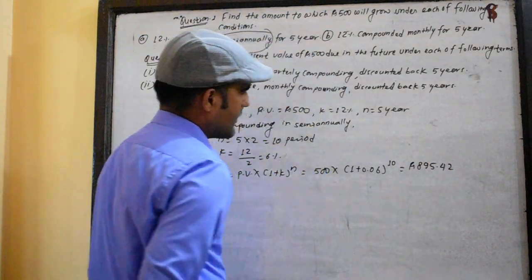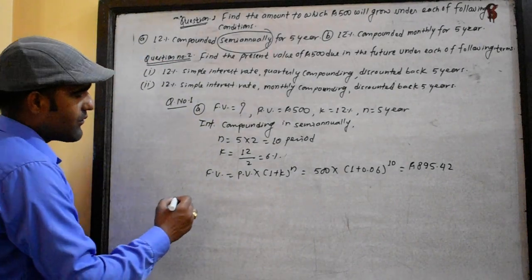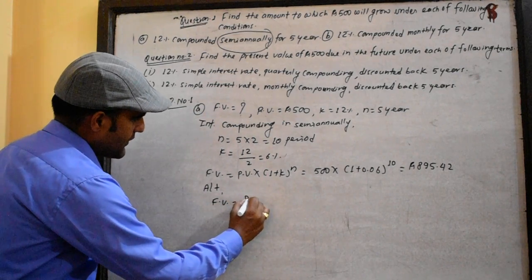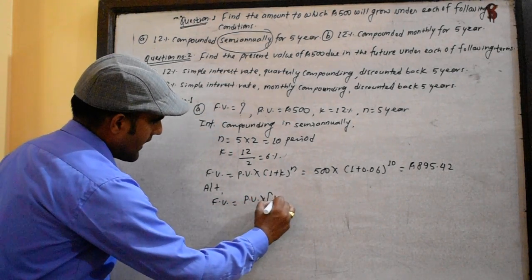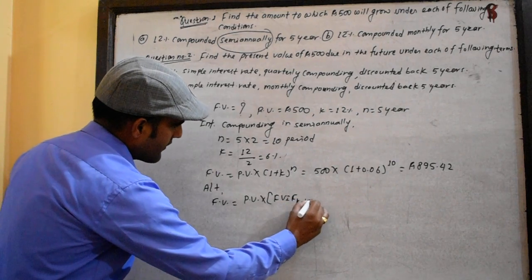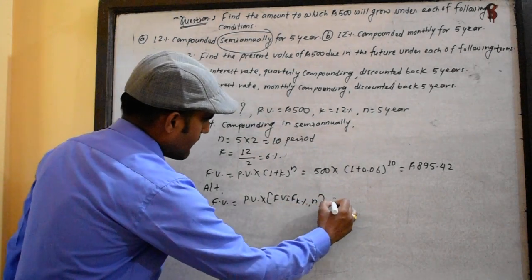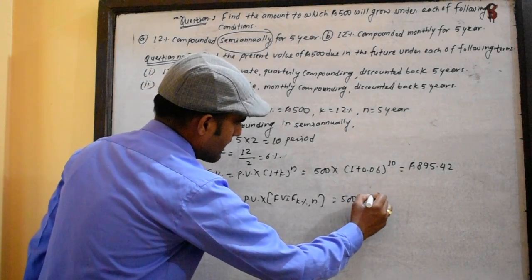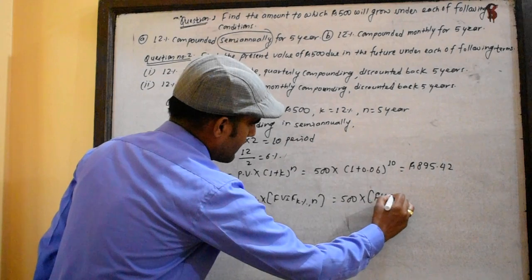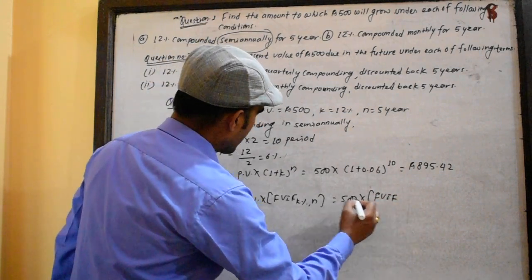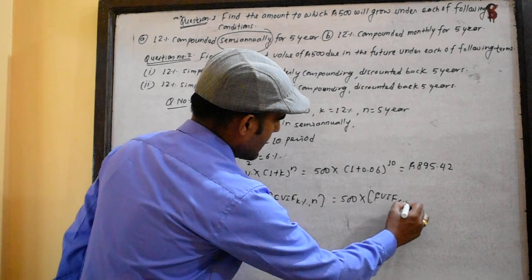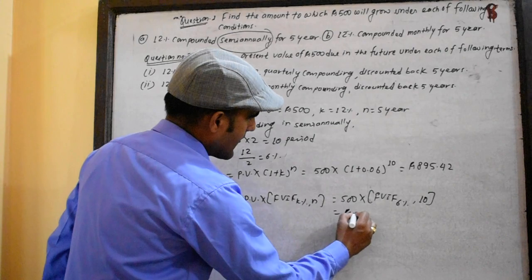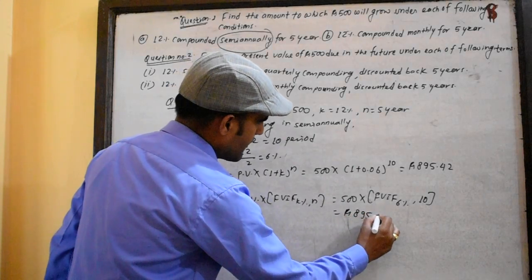895.42 — this is the future value. The alternative method: FV equals PV times FBIF at k percent for n years. PV is 500 times FBIF at 6%, n equals 10. This gives the same answer: 895.42.